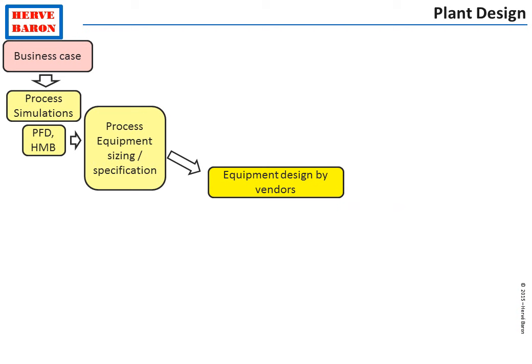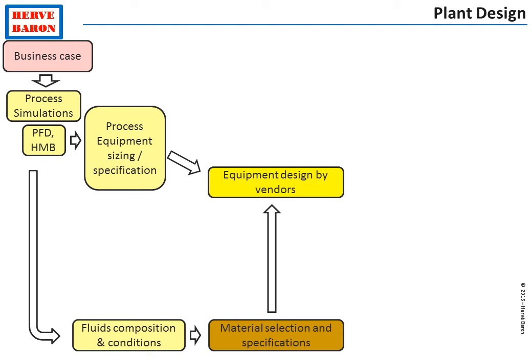To perform its design, the vendor needs the specification from process, but also the material of construction of the equipment. This is defined by another discipline: the material selection and corrosion specialist. He works from the list of fluids and their composition and conditions in the various parts of the process, and based on calculated corrosion rates, he defines the material of construction for the various equipment and pipes of the unit.